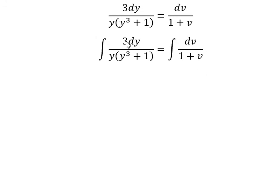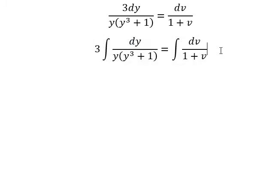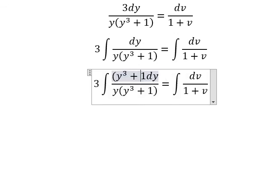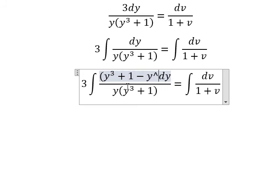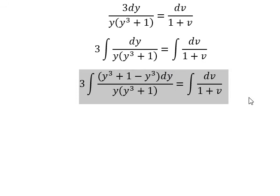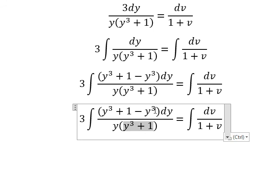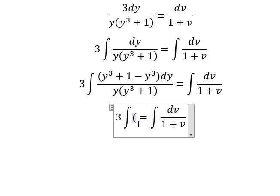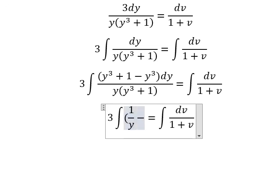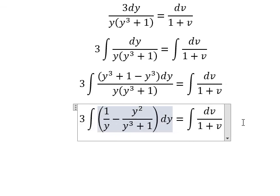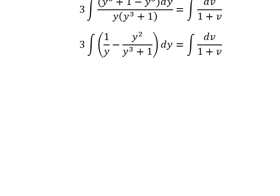Next, I will put number 3 inside. So I will add y to the power of 3, then we need to minus y to the power of 3. So this one divided by this one and this one divided by y gives us two fractions. The first one is 1 over y, the second one is y squared over y to the power of 3 plus 1 dy.